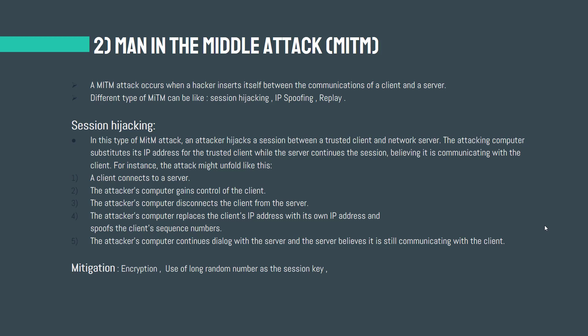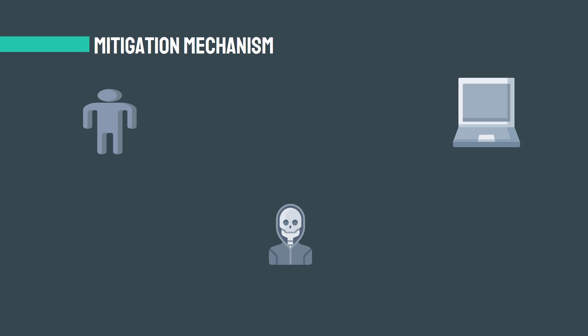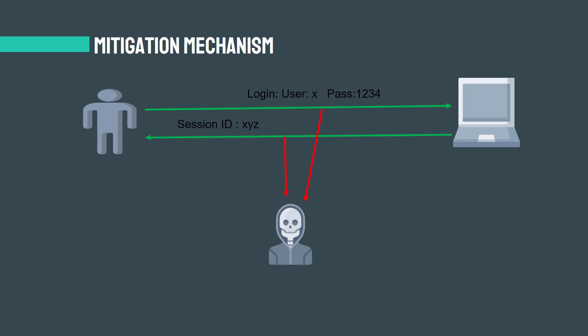Let me show you a simple simulation of session hijacking. The client sends a request to the server with the username X and the password 1234. But a malicious attacker is here — an unauthorized person who gets all of this information. When the server passes the session ID 'xyz' to the client, the unauthorized person can also read this information. After that, using the session ID, the attacker can continue its communication with the server, and the server believes it is communicating with the right client.